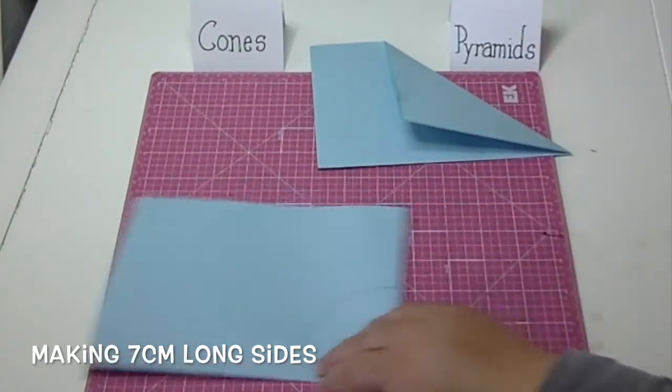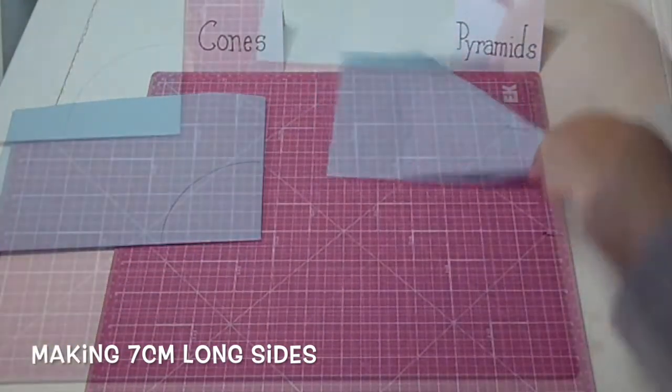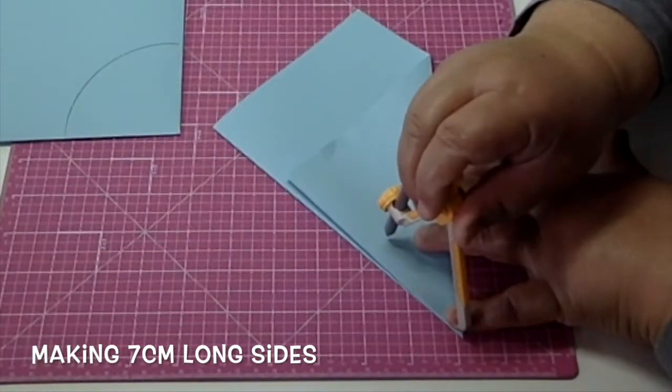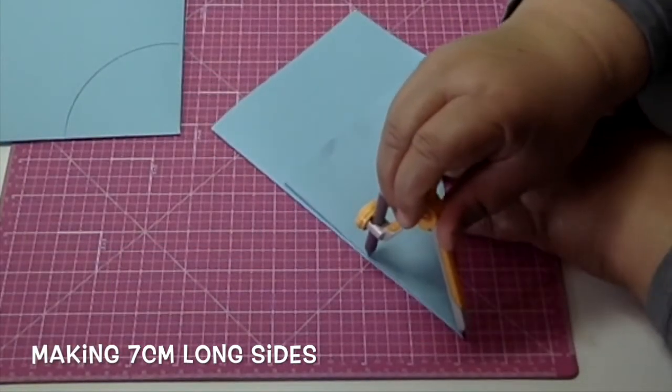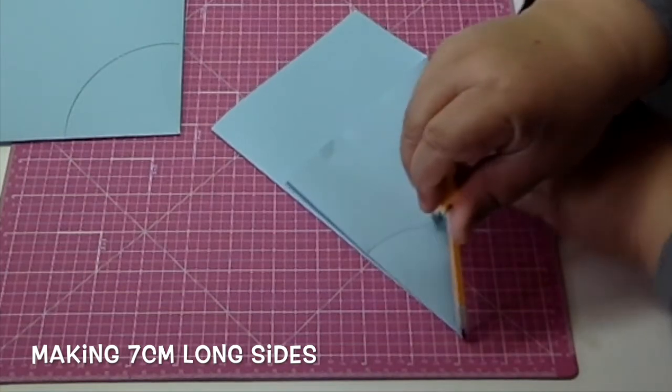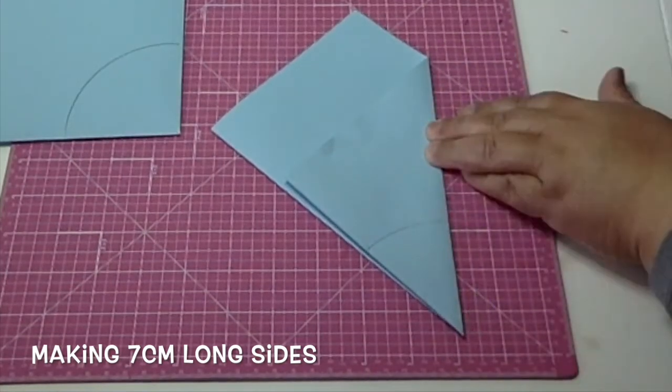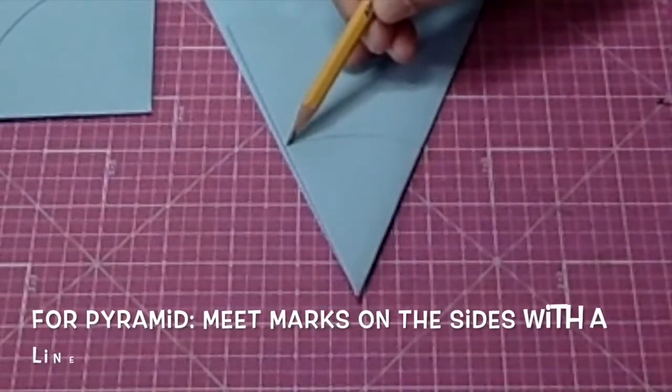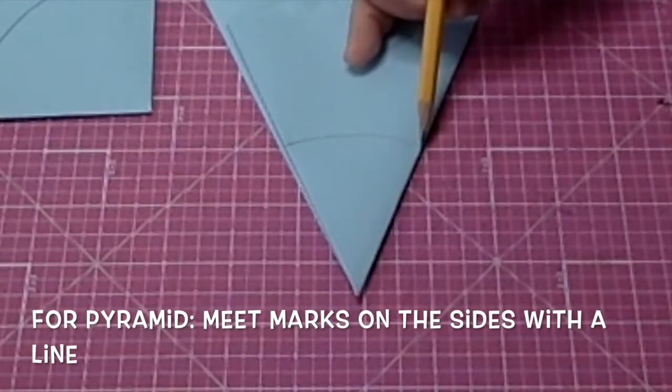For my pyramid, I also set the compass at the apex here and make my curve, just like I did with my cone.